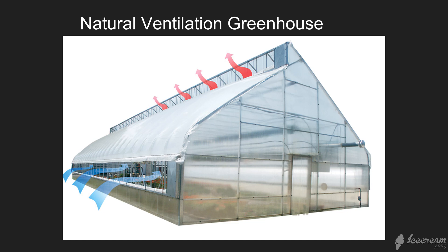In order to keep the environment exactly where you want it, you need to be able to control that temperature. The simplest way to do that is to allow the hot air to escape and bring in cooler air from the external environment. This is an example of a ridge vent — a natural ventilation greenhouse.